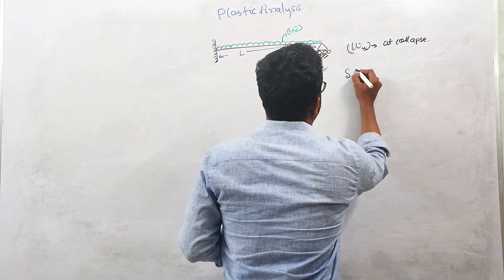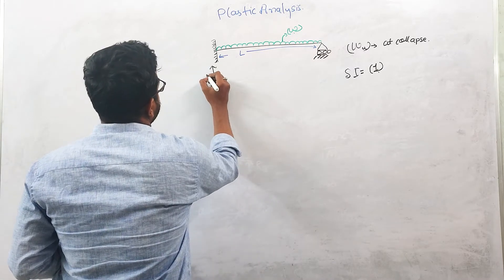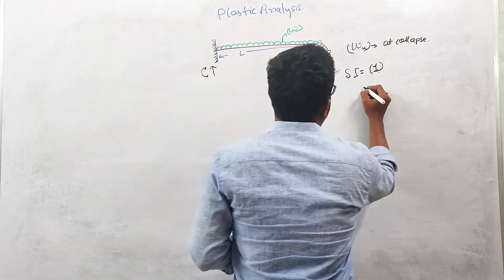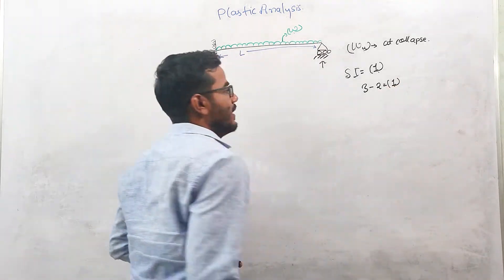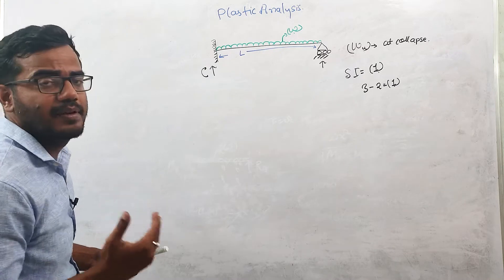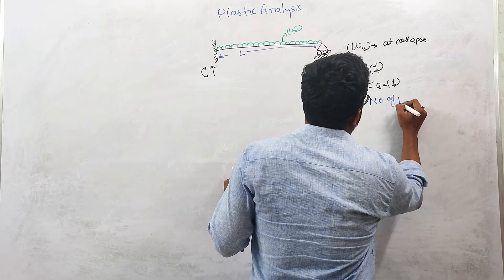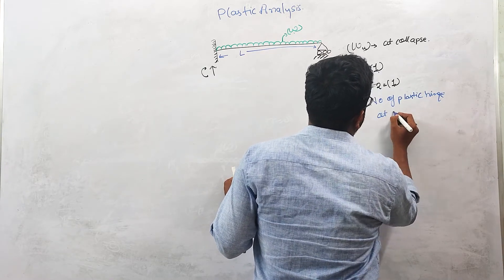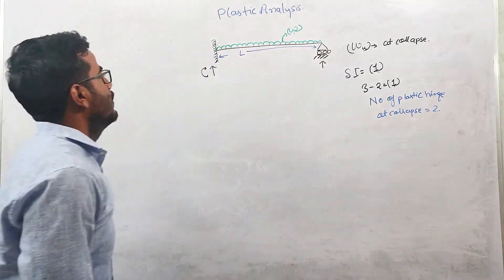This beam is statically indeterminate to one degree. The static indeterminacy is one because there is one vertical reaction, one moment at the fixed support, and one vertical reaction at the prop — total three reactions and two equilibrium equations, giving indeterminacy of one. Therefore, the number of plastic hinges required at collapse will be two.